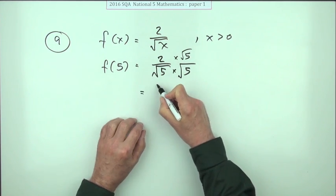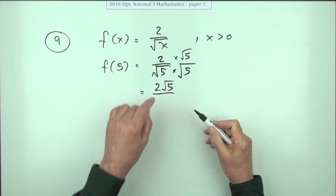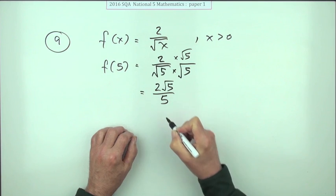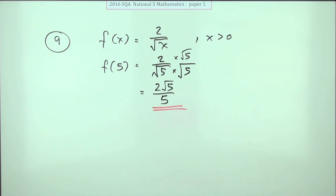Well the top's easy: two times root five is two root five. And the bottom's even easier because the square root of five times the square root of five reconstitutes the original five. And that's it done.